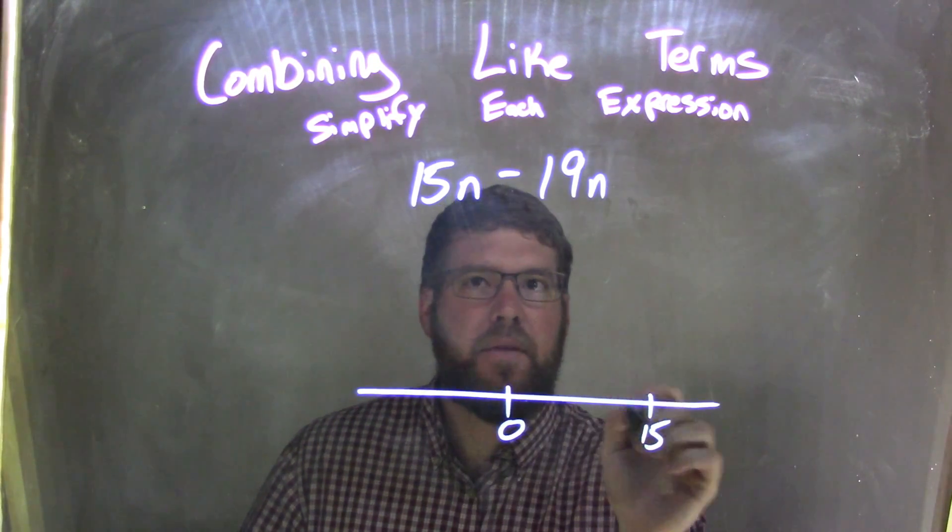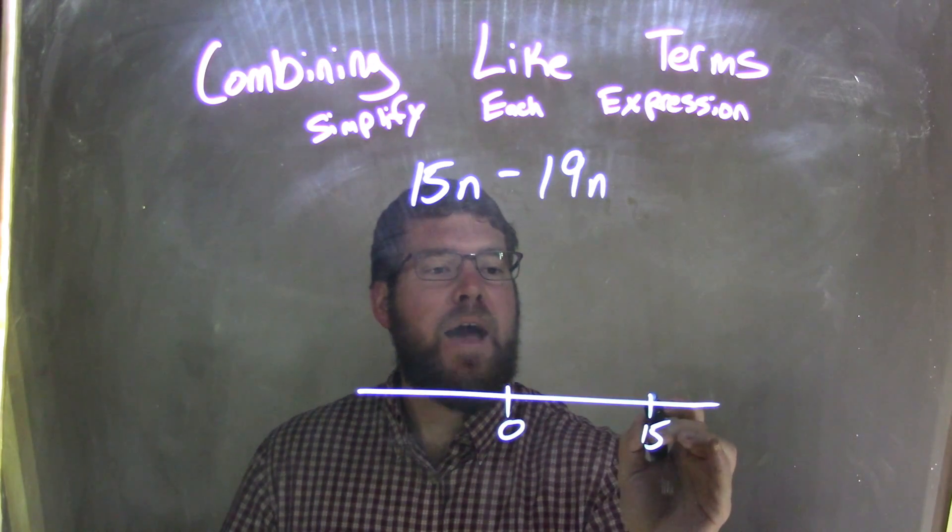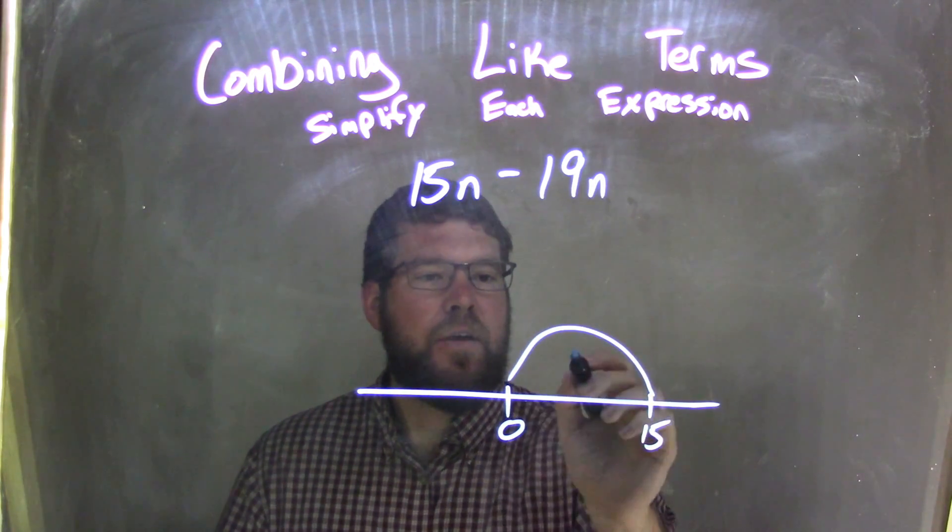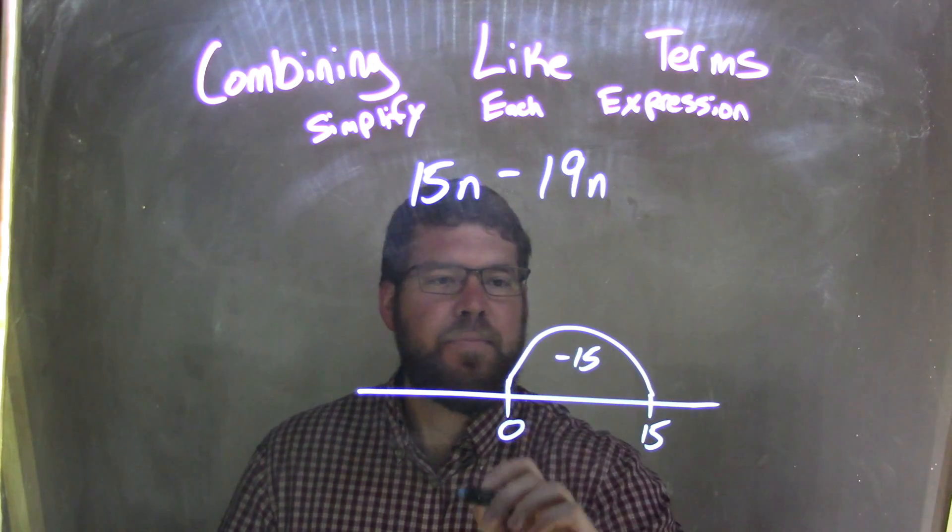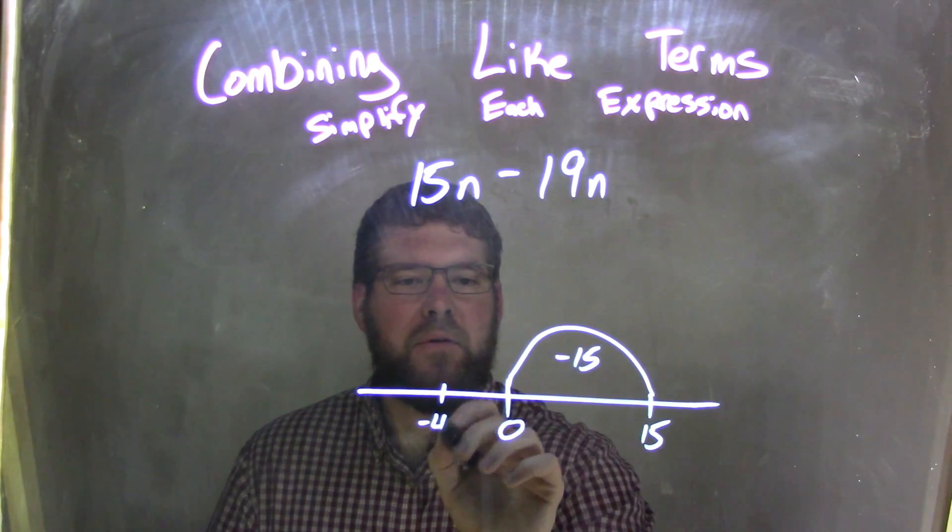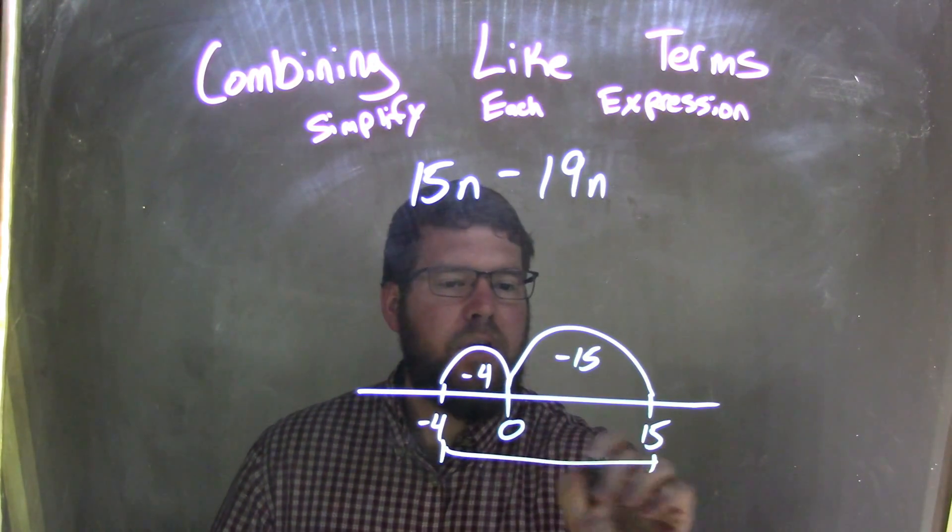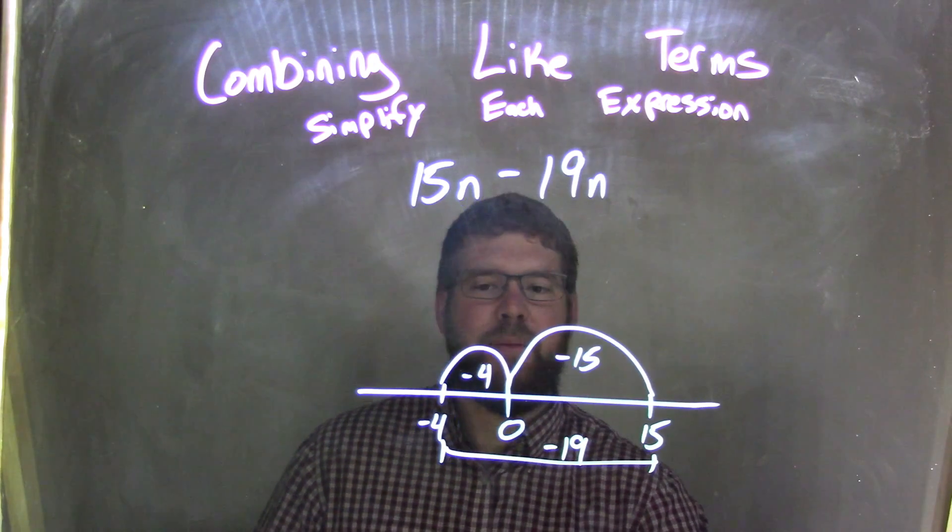So we start with 15 here. We start with that 15n, and I'm subtracting 19 units. If I subtract 15 units, I like to break it up. 15 brings me down to 0. Well, 4 more units, so I subtract 4 more to a total of minus 19. And that's what I need it to be.